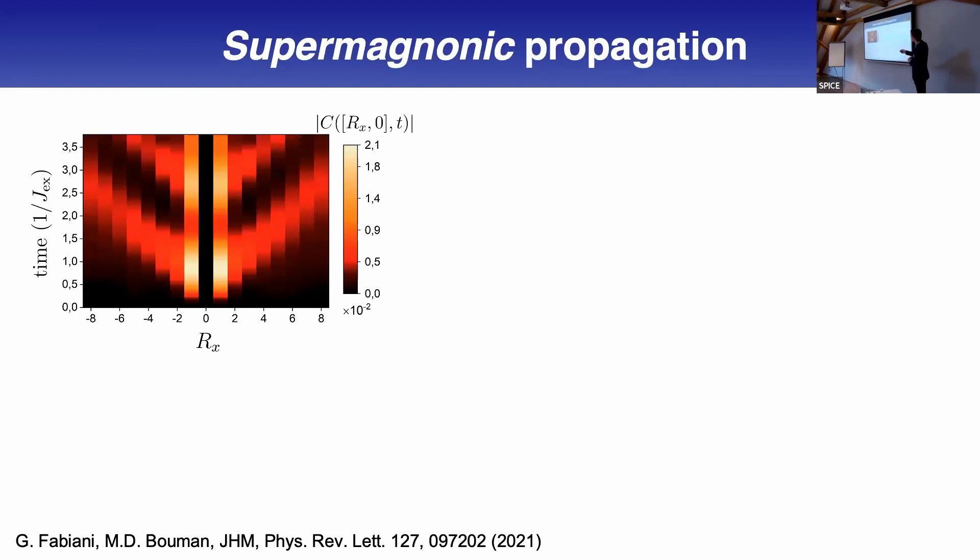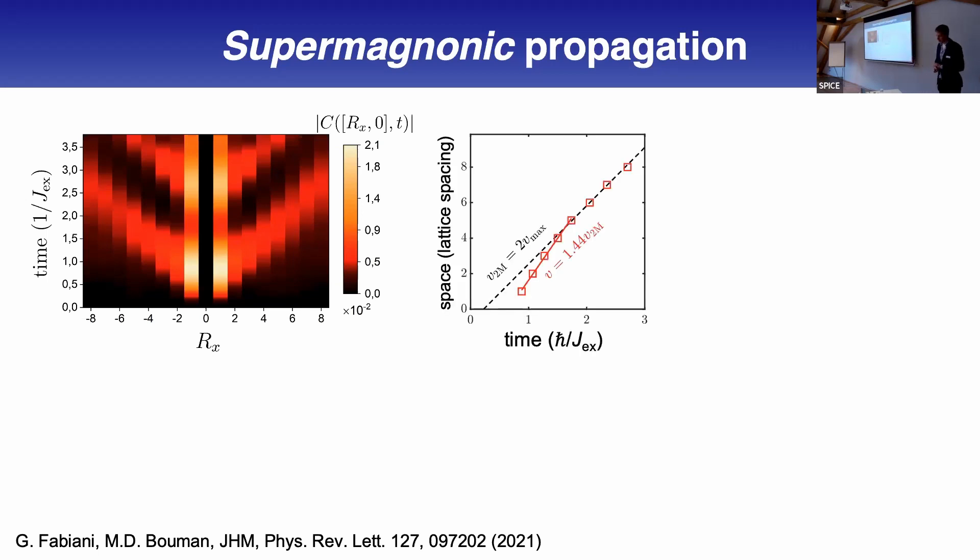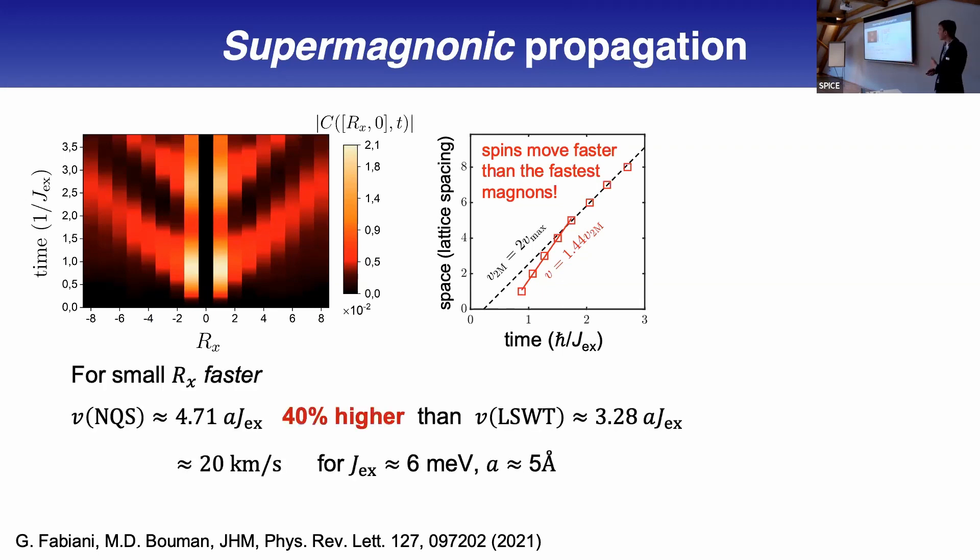This allows us to understand how fast this propagation is. We plotted the arrival time of this maximum as function of space. Here is space and here is time. What was very interesting is that at shortest distances, the propagation speed is even higher than we can expect from the highest magnon velocity. The highest velocity is the group velocity of these magnons. You excite two magnons, so you multiply by two, but this velocity is even higher. We could quantify this—it's up to 40% higher than simple spin wave theory.